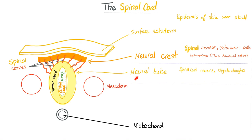In the second scenario, the neural tube is the spinal cord. The spinal nerves come from the neural crest. The cavity inside the spinal cord is called the central canal, containing CSF. The neural tube gives you spinal cord neurons and oligodendrocytes; the neural crest gives you spinal nerves, Schwann cells, and leptomeninges — which also cover the spinal cord as well as the brain.